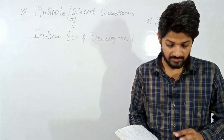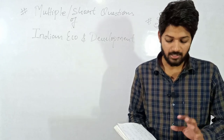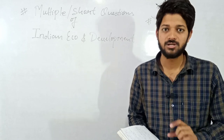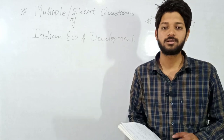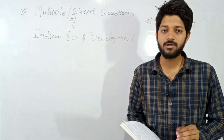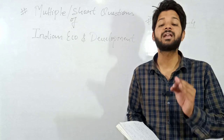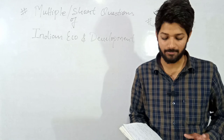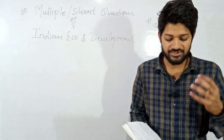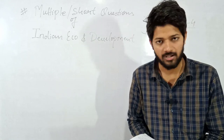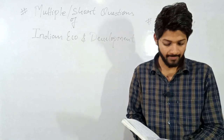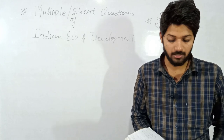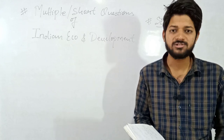Question number twenty: NABARD was established in the year dash, and which committee recommended it? The answer: NABARD — National Agriculture Bank for Rural and Development — was established in the year 1982, and it was done on the recommendation of the Shivaraman Committee.